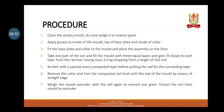Fit the base plate and collar to the mould and place the assembly on the floor. Take one part of soil, fill the mould with 3 equal layers, and give 25 blows to each layer from the rammer having mass 2.6 kg dropping from a height of 310 mm. Scratch with a spatula every compacted layer before putting soil for succeeding layers. Remove the collar and trim the compacted soil level with the top of the mould using a straight edge. Weigh the mould with the soil to the nearest 1 gram. Extract the soil from the mould using an extruder and cut the soil sample in the middle to take a representative specimen in an airtight container.